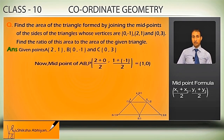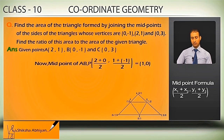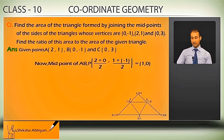Now midpoint of AB — you know the midpoint formula: if points are (x1,y1) and (x2,y2), then the midpoint is ((x1+x2)/2, (y1+y2)/2). Using this formula, I let midpoint of AB be P. It is ((2+0)/2, (1+(-1))/2) = (2/2, 0/2) = (1, 0). So P is (1, 0).